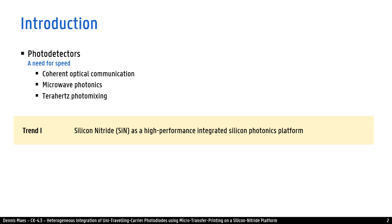The first trend we can observe is that silicon nitride is adopted as the high-performance integrated silicon photonics platform. It features very low losses, has superior filters, and does not suffer from two-photon absorption.